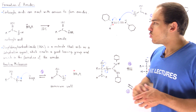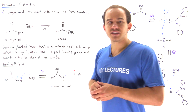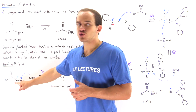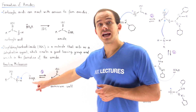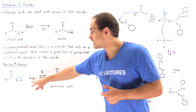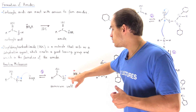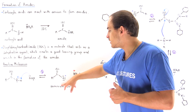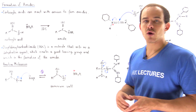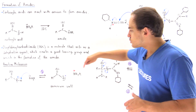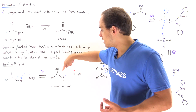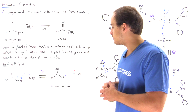In the first step, we take the carboxylic acid and deprotonate the H atom attached to our oxygen by using an amine. We form the conjugate acid of that base, and these two species interact to form our ammonium salt. This salt contains a negative charge that is delocalized among the two oxygen atoms.